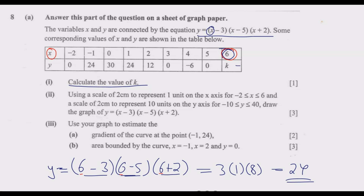k is equal to 24. We go to number 2: using a scale of 2 cm to represent 1 unit on the x-axis, for the interval x is greater than or equal to negative 2 but less than or equal to 6.